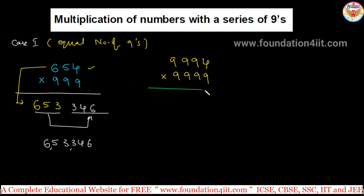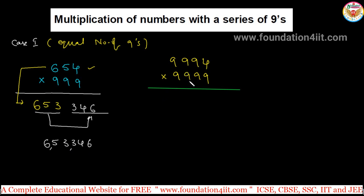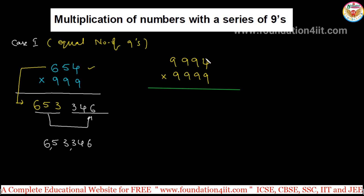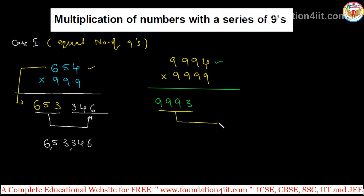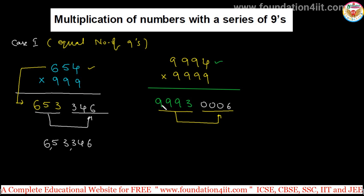Let us see one more example for Case 1: 9994 multiplied by 9999. Take the number 9994, subtract 1 to get 9993, and write that. Now for the next four digits, subtract each digit of 9994 from 9: 9 minus 9 is 0, 9 minus 9 is 0, 9 minus 9 is 0, and 9 minus 4 is 6. So the answer is 99930006.